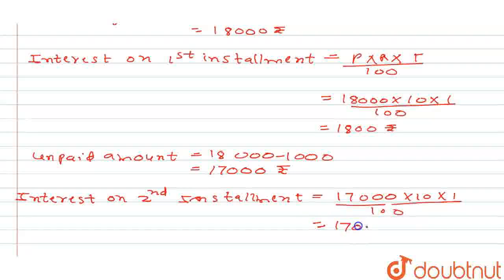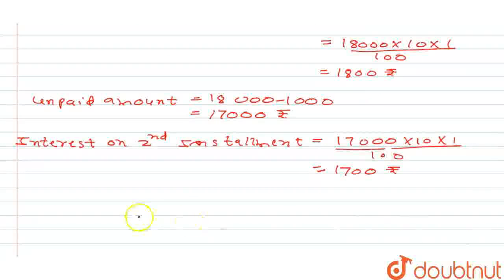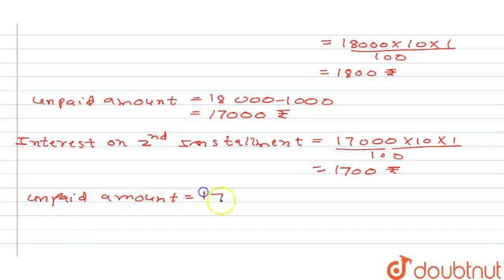So this time he paid Rs. 1,700 as interest. Apart from that he paid Rs. 1,000 every year. So unpaid amount is 17,000 minus 1,000, that is Rs. 16,000.